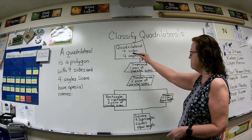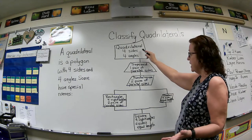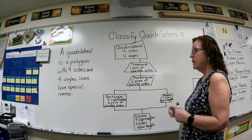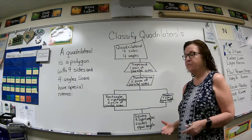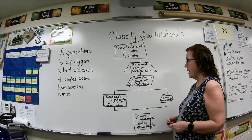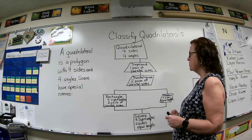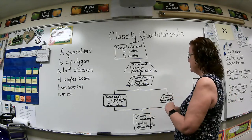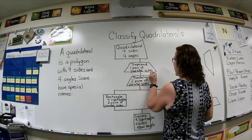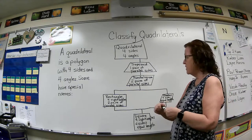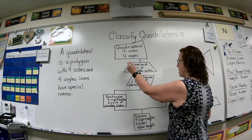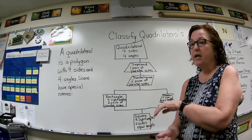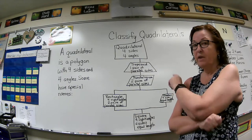I have a four-sided figure here and it's a quadrilateral — it has four sides and four angles. One of the special names for quadrilaterals is a trapezoid. A trapezoid is a quadrilateral with four sides and four angles, but one pair of its sides are parallel. You can see that this side and this side are parallel to each other, and then the other two sides are not parallel. So a trapezoid is a very special figure — just look for one pair of parallel sides.